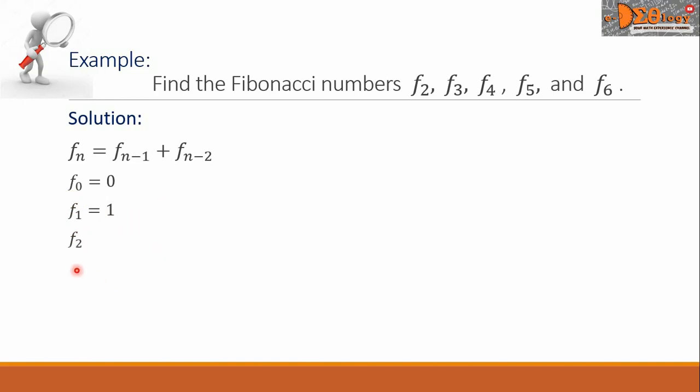Let's begin with F sub 2. Here, our n is equal to 2. So, corresponding to our formula, this is equal to F sub 1 plus F sub 0. Substituting the values, F sub 1 is 1 plus F sub 0 is 0, and the sum is 1. This is F sub 2.